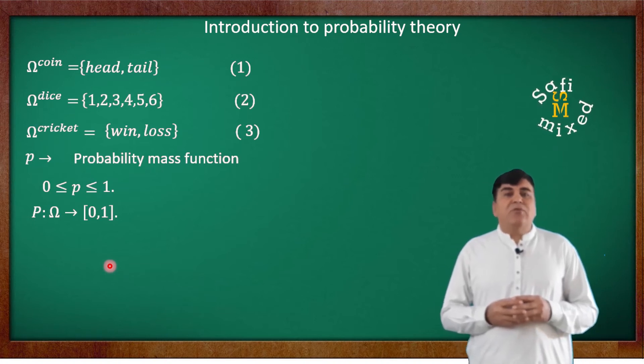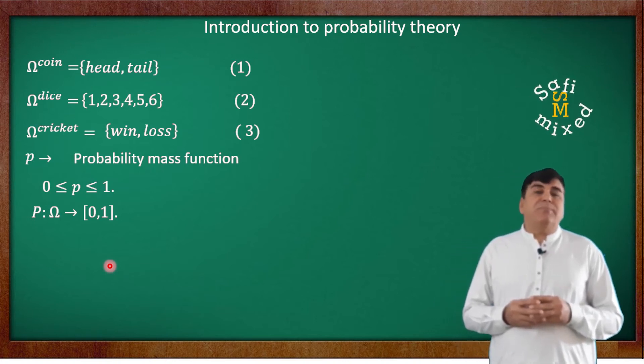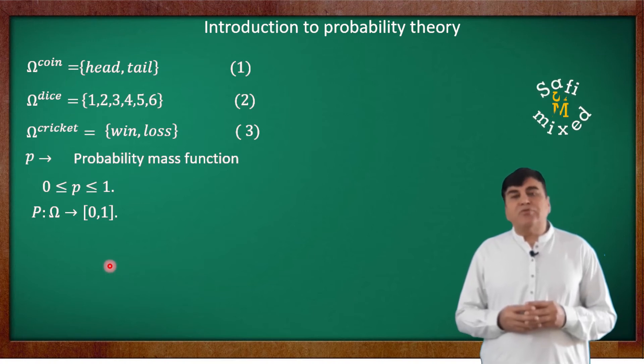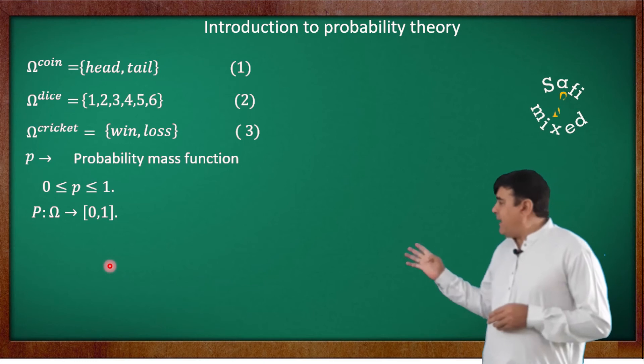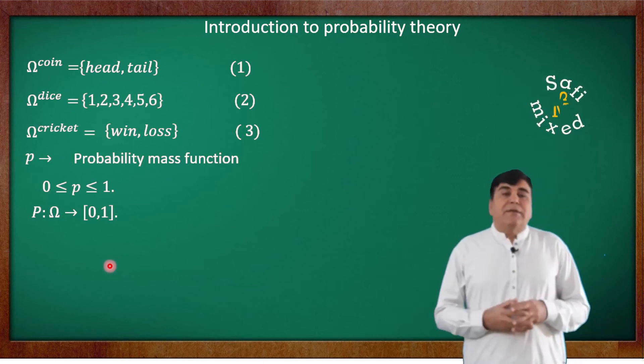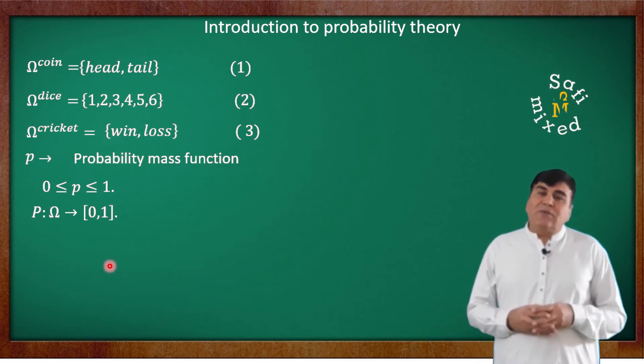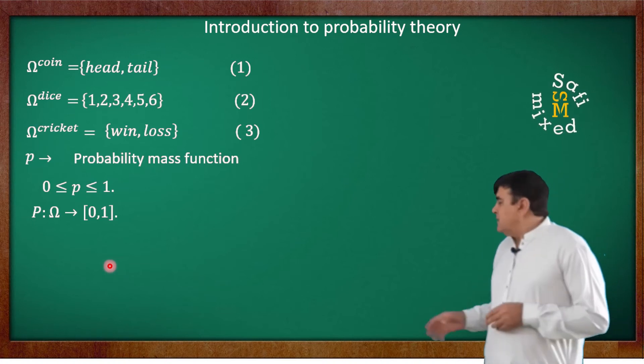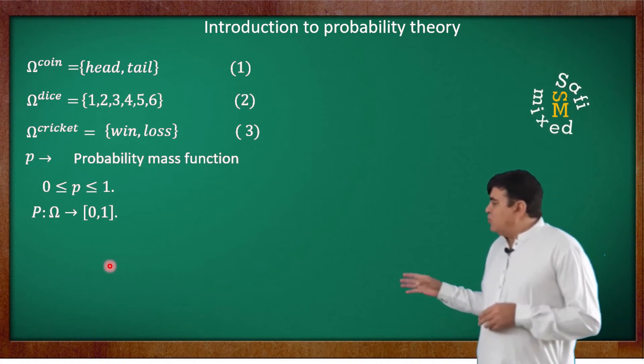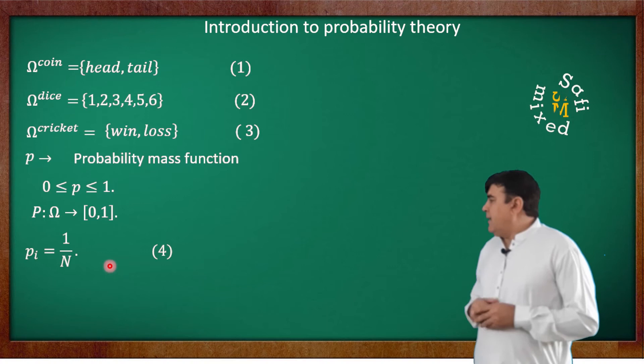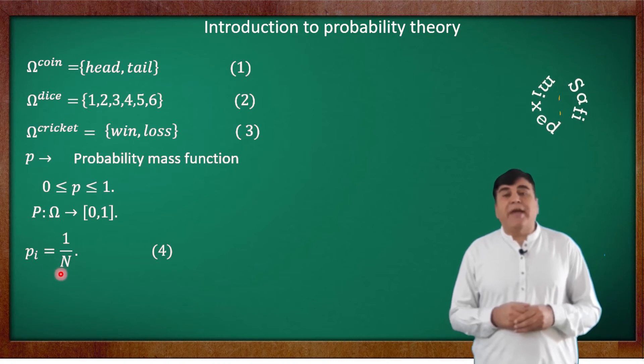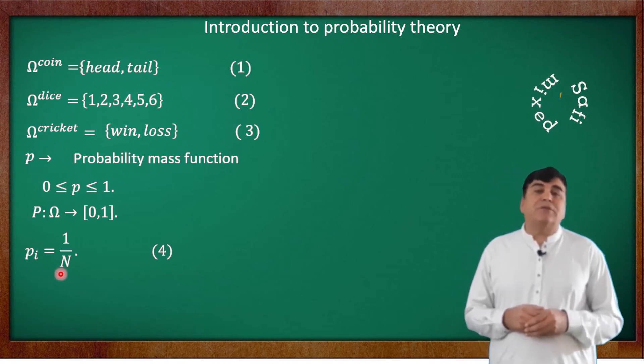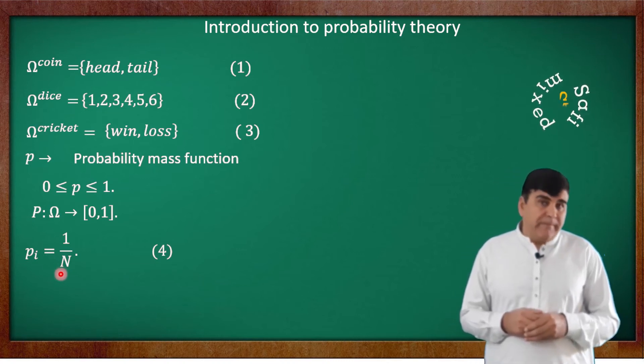If every outcome of an event is equally probable and the number of total outcomes of an event is represented by capital N, then the mass function of ith outcome is written as P_i = 1/N. That is, every outcome has a probability equal to the inverse of the number of total expected outcomes of an event.